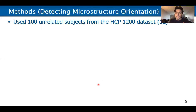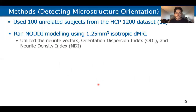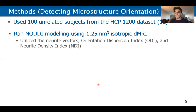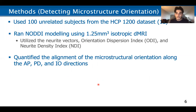We used 100 unrelated subjects from the HCP-1200 dataset, and we ran neurite orientation dispersion and density imaging (NODDI) modeling using 1.25 millimeter isotropic diffusion data. We utilized neurite vectors at each voxel representing the orientation of the underlying microstructure, the orientation dispersion index (ODI), and the neurite density index (NDI). We quantified the alignment of the microstructural orientation along the anterior-posterior, proximal-distal, and inner-outer directions, with the knowledge that specific microstructural properties tend to be highly aligned along one of these directions.